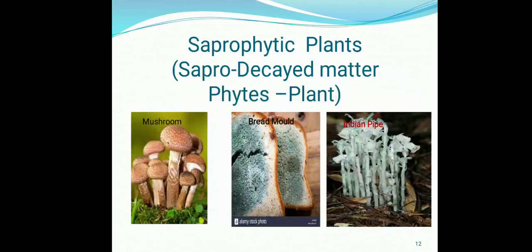Now we come to the second heterotrophic type: saprophytic plants. Sapro means decayed matter and phytes means plant. Those plants which are dependent on dead and decayed organic matter are called saprophytic plants. They release enzymes on the dead and decayed matter, which convert that matter into a liquid form that is then absorbed by these saprophytic plants. Basic examples of saprophytic plants are mushroom, bread mold, and the Indian pipe.